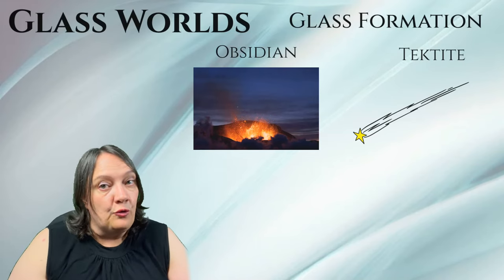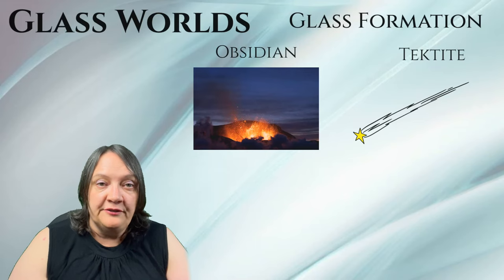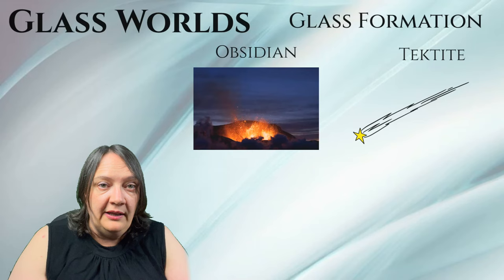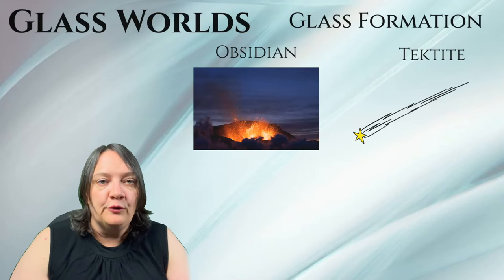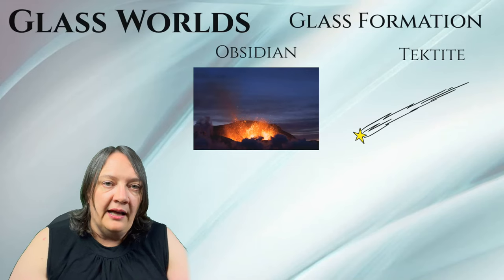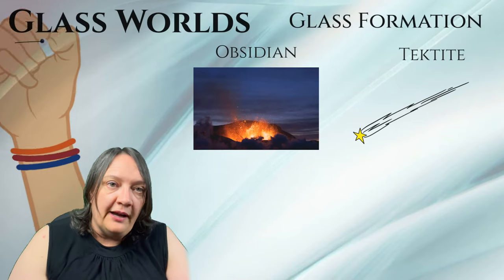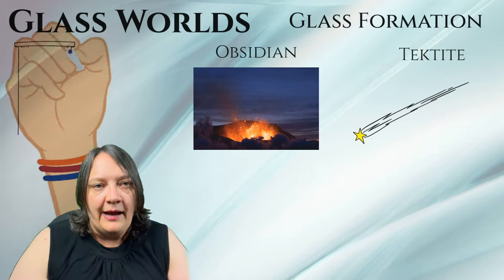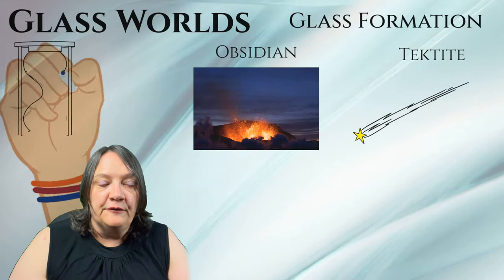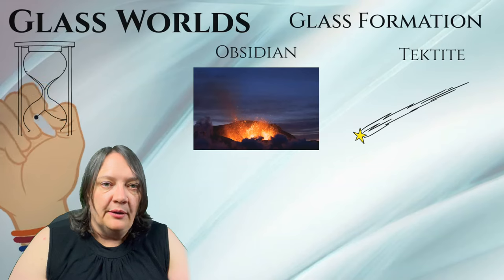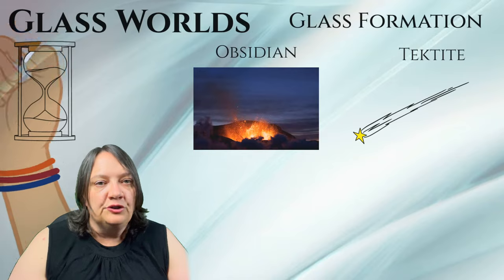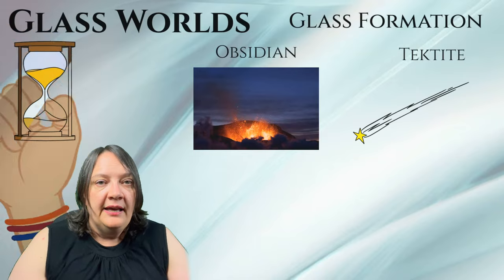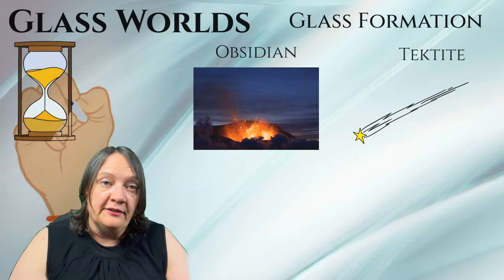Tektites come in a variety of shapes, sizes and colors. They can be spherical, teardrop-shaped or irregularly shaped, and their sizes range from a few millimeters to several centimeters in diameter. Like obsidian, they are typically black or dark brown or greenish. Their surface can be smooth or textured, sometimes exhibiting grooves, pits or sculpted features that result from aerodynamic forces during their flight through the atmosphere.